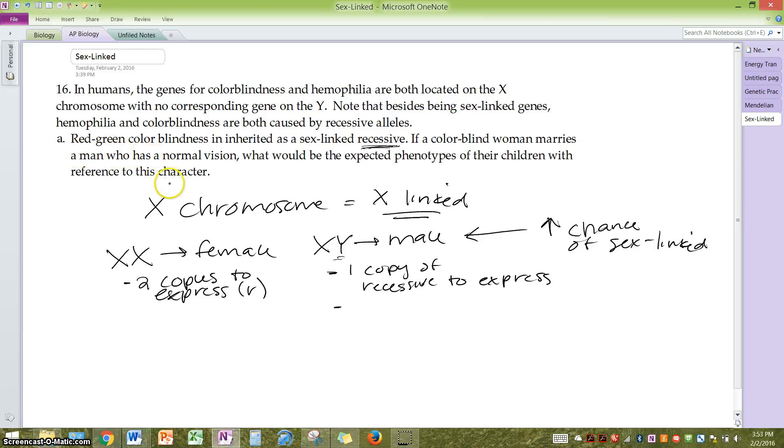So let's look at this one. If a colorblind woman marries a man with normal vision. So let's make a key first, so we can get our alleles straight. I'm going to do X, and then I'm going to do an R for red-green colorblindness. C's kind of look too similar. So a big R is going to indicate normal. A little r is going to indicate colorblindness. So make a key. It's really helpful.